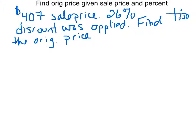All right, so we know that 407 represented 74%. How did I get that? Because if we had a discount of 26%, we did 100% minus that 26%, and that gave us 74%.